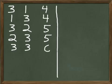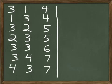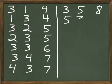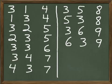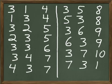3 and 4 are 7. 4 and 3 are 7. 3 and 5 are 8. 5 and 3 are 8. 3 and 6 are 9. 6 and 3 are 9. 3 and 7 are 10. 7 and 3 are 10.